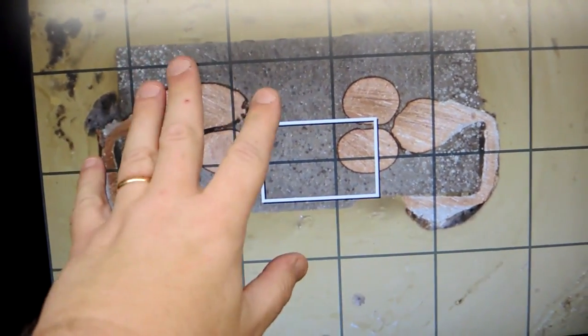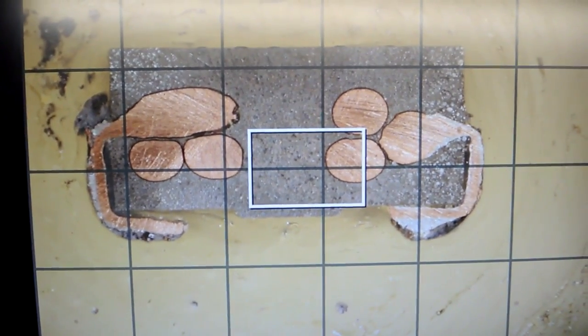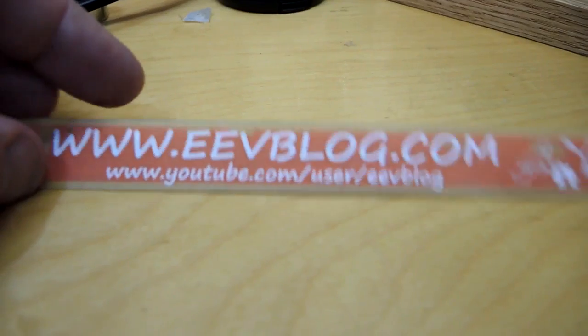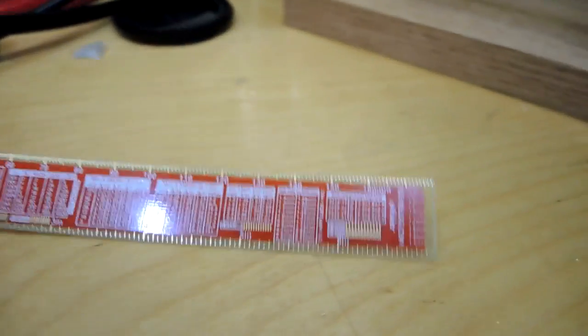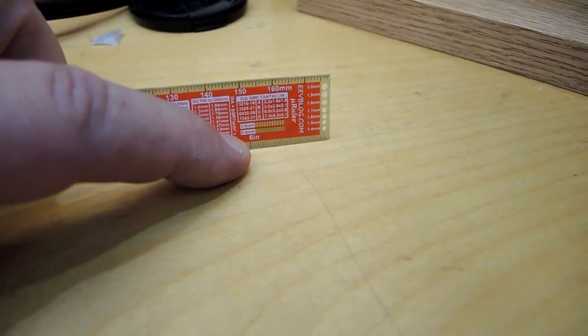Now I need to calibrate that against a known source. One of the really best things is these PCB rulers. This is the one from EEV blog. Very fortunate when it was designed, it was made with a 0.4 millimeter scale on it.